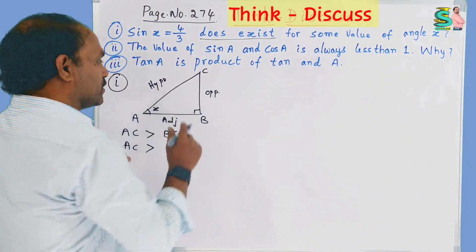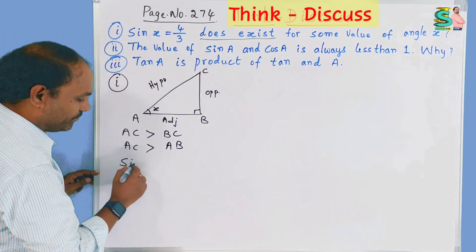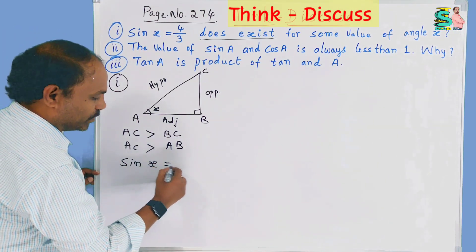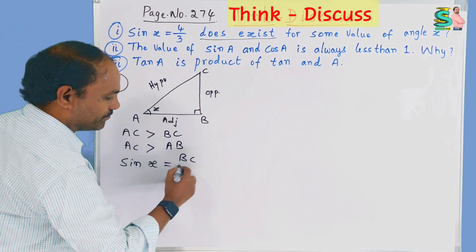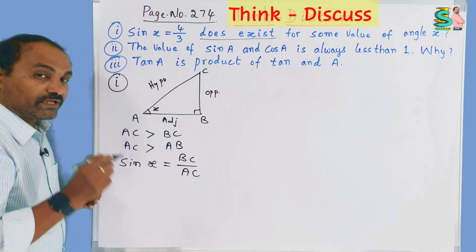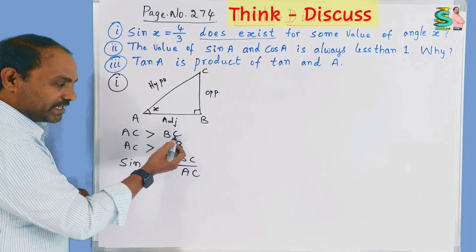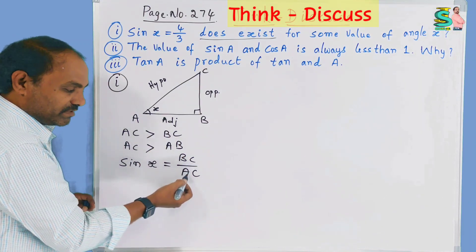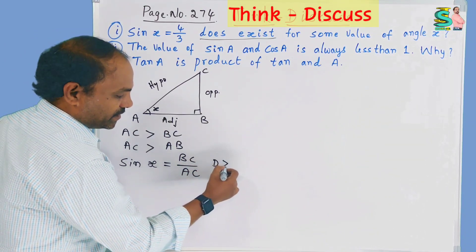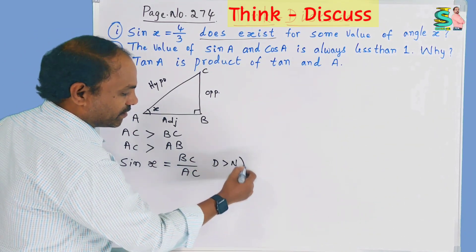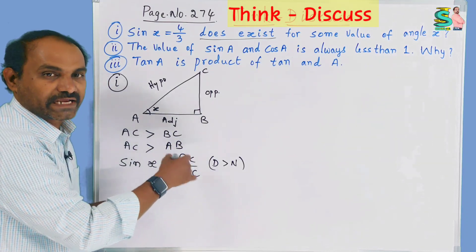Now, sin x = BC/AC. What do we notice here? AC is greater than BC, meaning the denominator is greater than the numerator. When the denominator is greater than the numerator, we say it is a proper fraction.